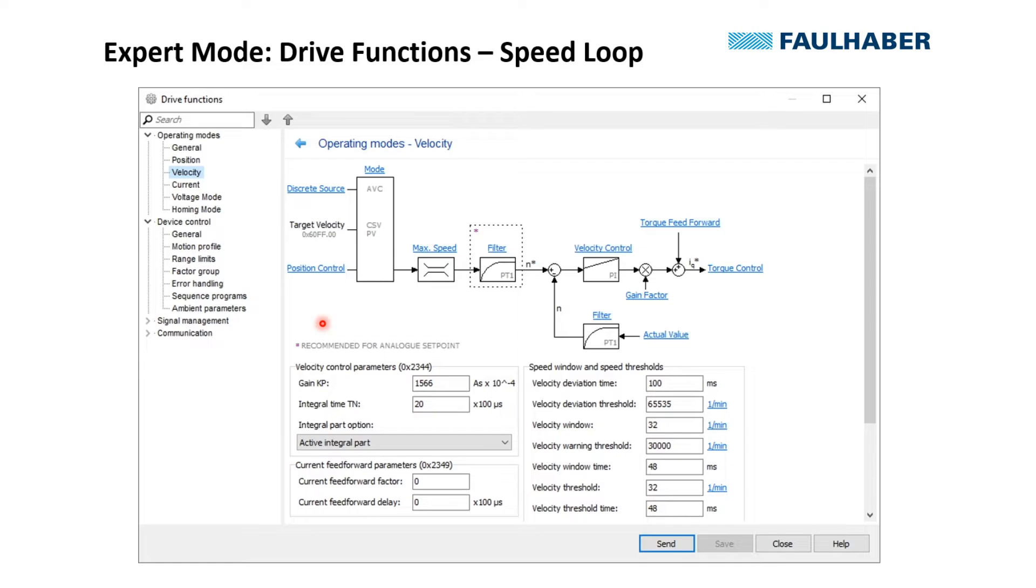Same for the speed loop, same approach: graphics on top, parameters down here. Selections are either switch back to the torque control loop, or here you can select the sensor. So if you've got more than one encoder connected to your motor, you could select the one to be used for the speed loop here.